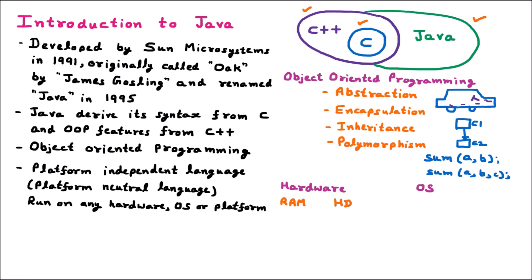If we talk about the operating system, we have Windows, Mac, and Linux. So if you are designing a code in Java, let's say in Windows, that code can run on Mac, Linux, Solaris, Ubuntu — every operating system it can work. Meaning you are designing a code in Java on one operating system and it can work everywhere.